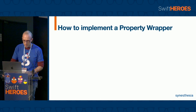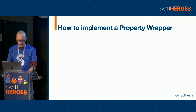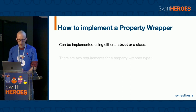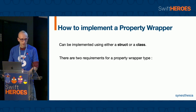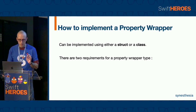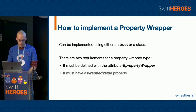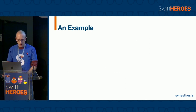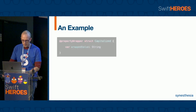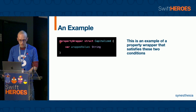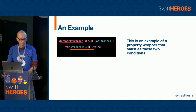How to implement a property wrapper? We can implement a property wrapper using either a struct or a class. There are only two conditions: it must be defined with the attribute @propertyWrapper, and it must have a wrappedValue property. This is an example of a property wrapper that satisfies these two conditions — the @propertyWrapper attribute and the wrappedValue.